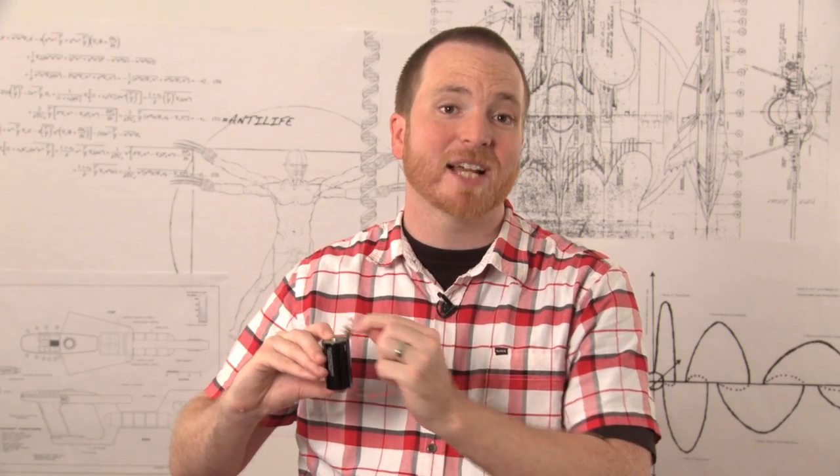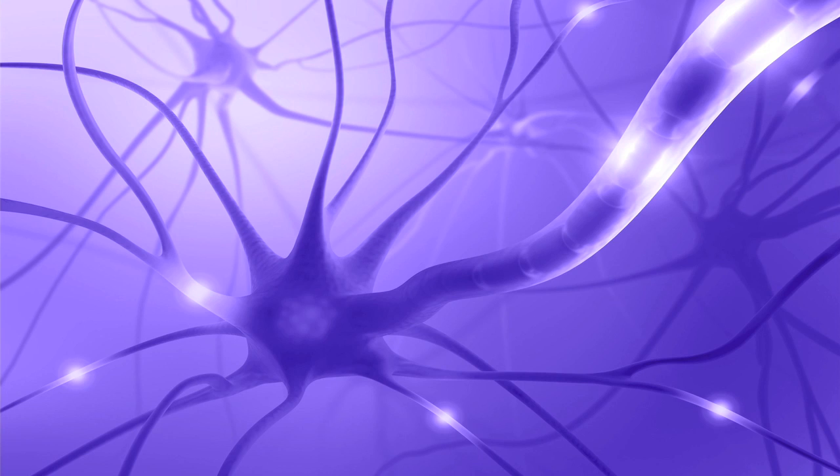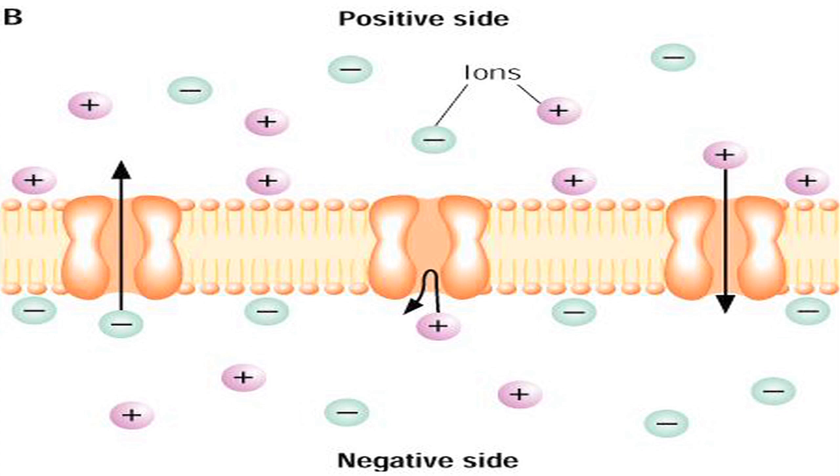The same thing is happening within your cells, except instead of electrons, your cells are using ions. Those are negatively or positively charged atoms. Let's take a nerve cell as an example. The membrane of a neuron acts like the separator in a battery. It lets positively charged ions build up on the outside, and negatively charged particles build up on the inside.